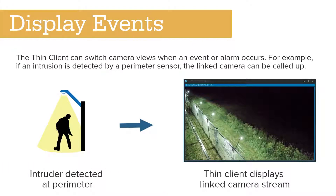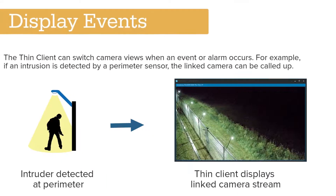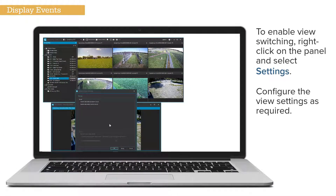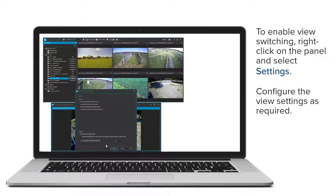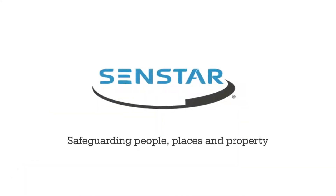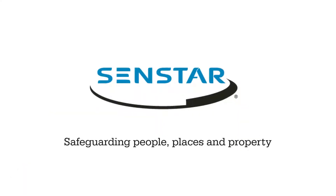The ThinClient can switch camera views when an event or alarm occurs. For example, if an intrusion is detected by a perimeter sensor, the linked camera can be called up. To enable view switching, right-click on the panel and select Settings. Configure the settings as required. The ThinClient will now switch views when an event or alarm occurs.